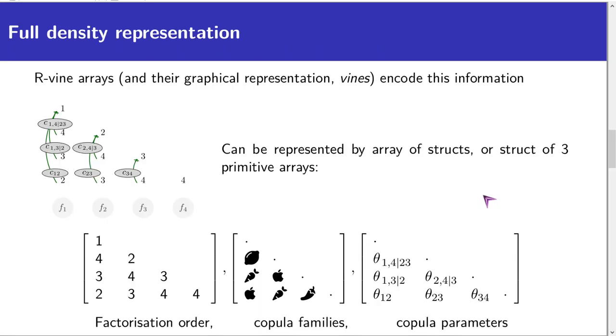In addition to the R-vine array, this vine-copula likelihood decomposition needs two more lower triangular arrays to be complete, one for the assignment of copula families and one to store their parameters.